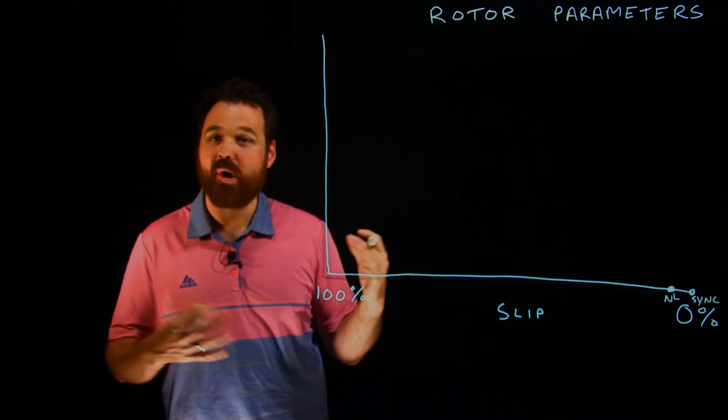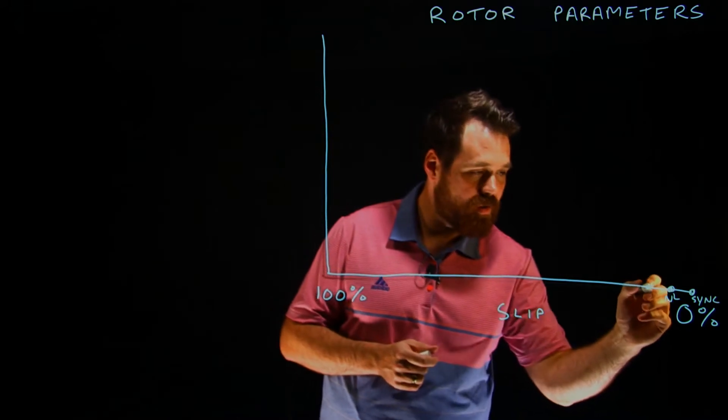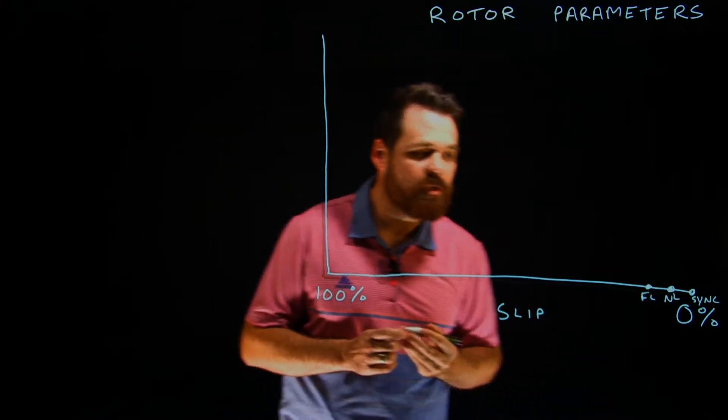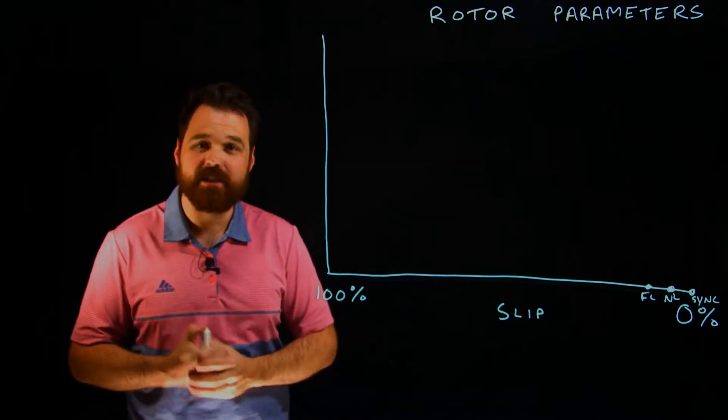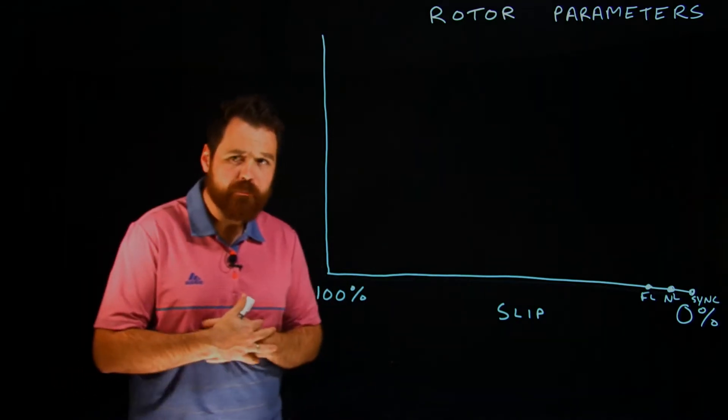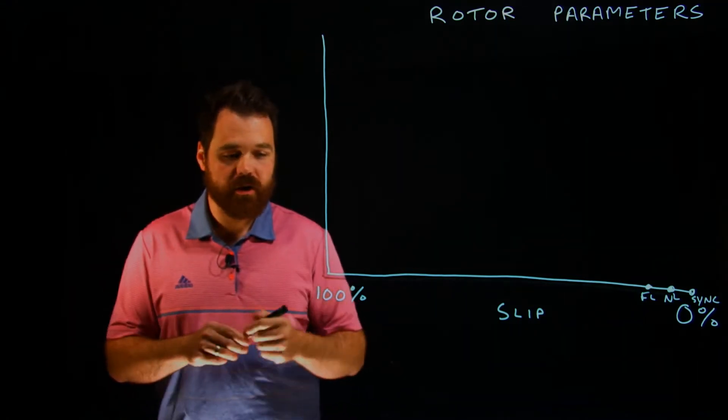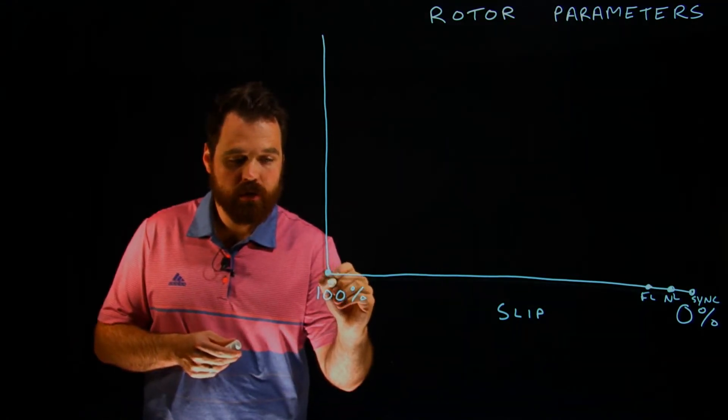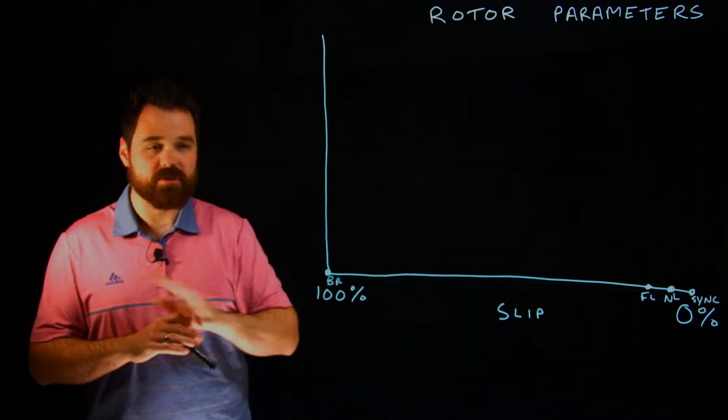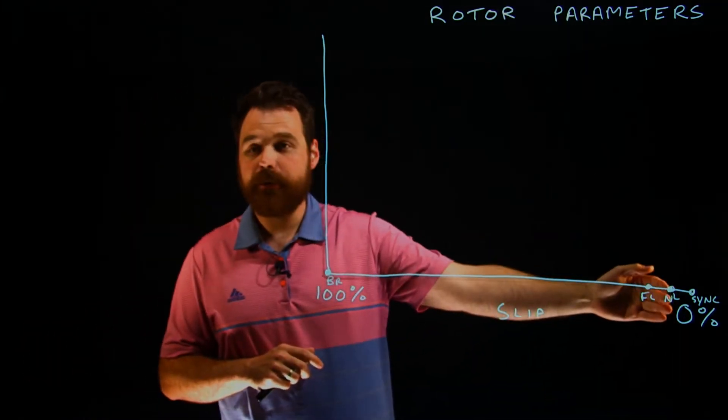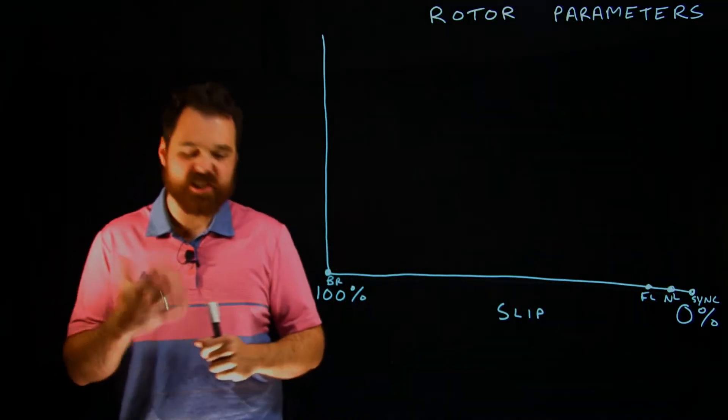And then we would have our full load speed pretty close there as well. We usually talk about two to 8% slip for that full load. So we'll kind of talk about how that rotor is from what we would call down here a blocked rotor, meaning it is stopped. There's 100% slip. The synchronous speed is whatever it is. Rotor is not spinning at all.